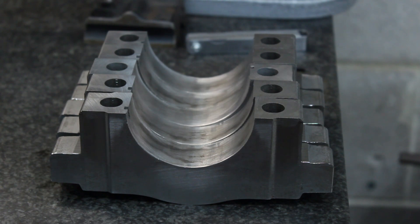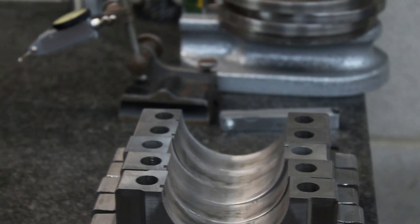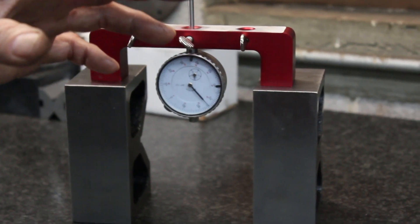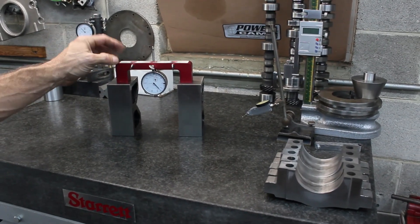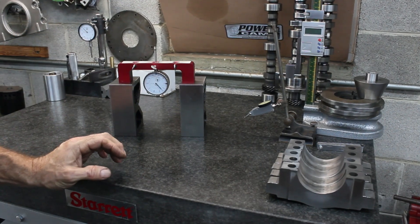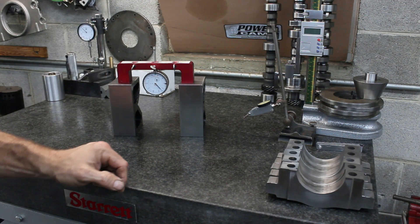So what we do is we take, they make a fancy fixture for all this, but I see people asking on forums, some of the engine forums, what's the easiest way to measure. And so what we do is we take a deck bridge, this is the same gauge we use to check our piston protrusion, and we just flip the indicator upside down.